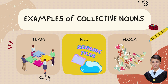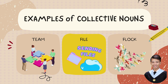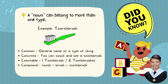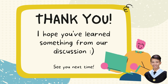One important thing we should not forget: a noun can belong to more than one type. For example, toothbrush is a common noun because it is a general name of a type of thing. It is also a concrete noun because you can touch and see it; a countable noun because you can count toothbrushes; and a compound noun because it is written as one word — tooth plus brush. I hope you've learned something from our discussion. Thank you so much, and see you next time.